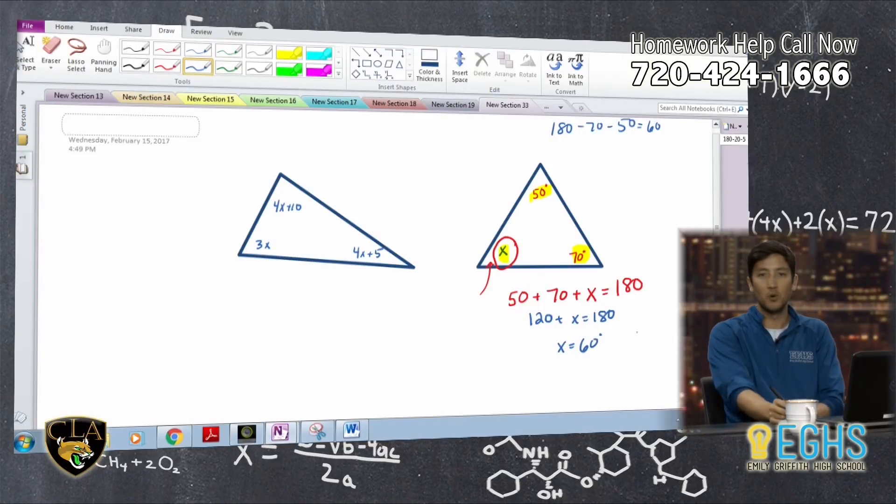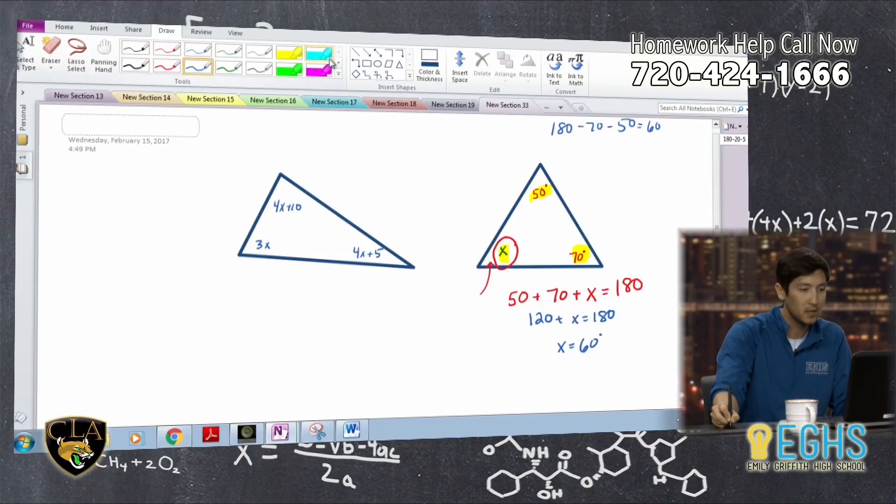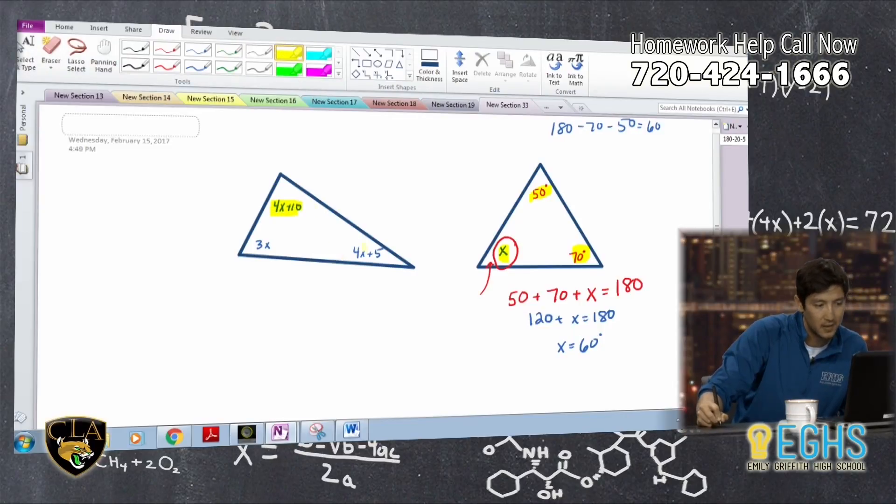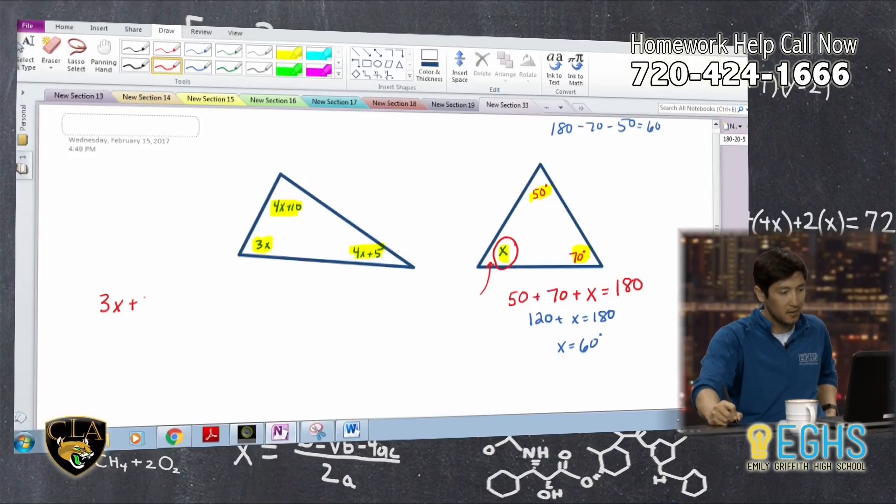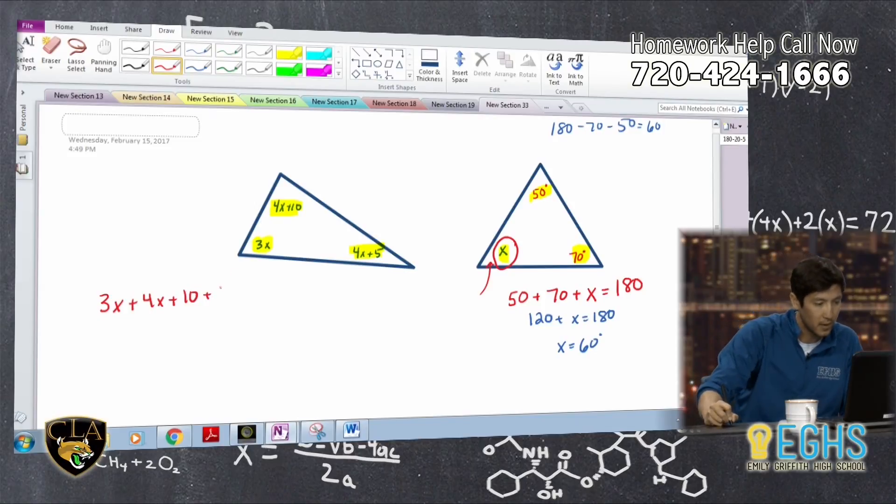So that is a more straightforward solution than what you have over here, but if you think about it, it is the exact same concept, just with kind of more going on. We're still saying all three of these angles have to add up to 180 degrees. So all we need to do then is say 3X plus 4X plus 10 plus 4X plus 5.